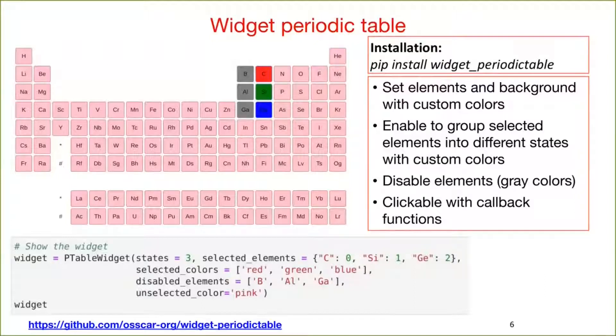The second widget is interactive periodic table. One can change the background color of different elements. The user can group elements into different states. And in each state, you can choose custom colors. The elements are clickable. By clicking the elements, the users can select elements and toggle states. The elements can also be disabled, which prevents clicking. One can define the callback functions from the click event. Install the widget by pip.